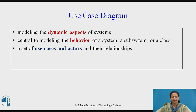Use case diagrams are the diagrams in the UML for modeling the dynamic aspects of systems. They are central to modeling the behavior of a system, a sub-system or a class. Each one shows a set of use cases and actors and their relationships. We apply use case diagrams to model the use case view of a system, which involves modeling the context of a system, subsystem or class, or modeling the requirements of the behavior of these elements.